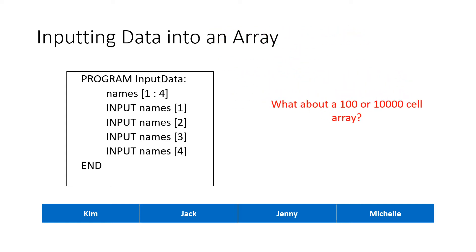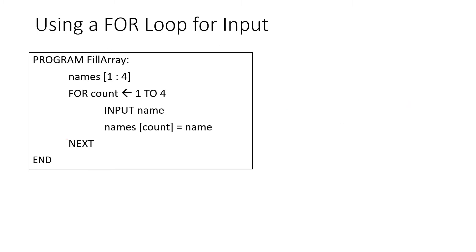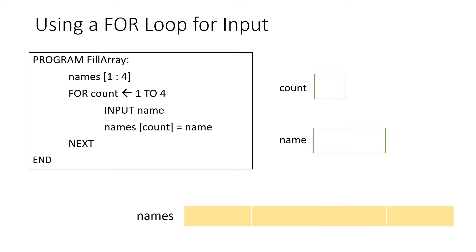But what if you had 100 cells or 10,000 cells? This could get quite tedious, so we're going to use a for loop. The pseudocode would look like: program FillArray: names[1:4], for count = 1 to 4, input name, names[count] = name, next, and end. Here are the variables we're working with, and let's see how they'll be filled.